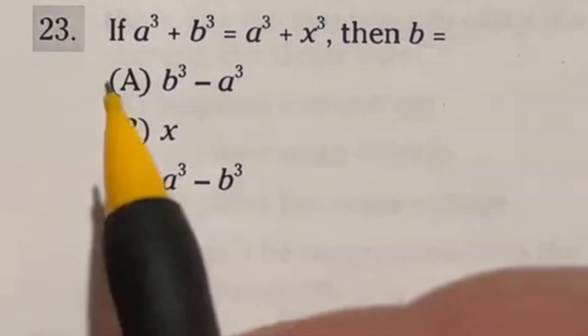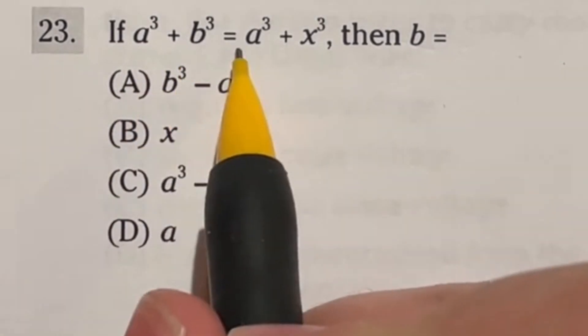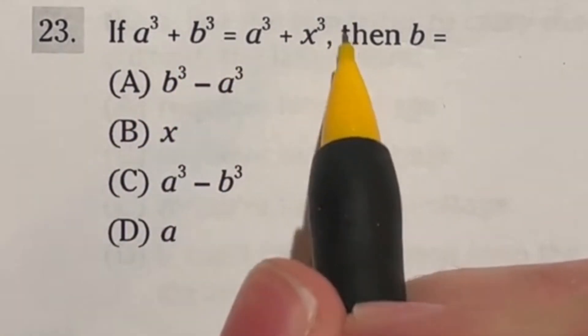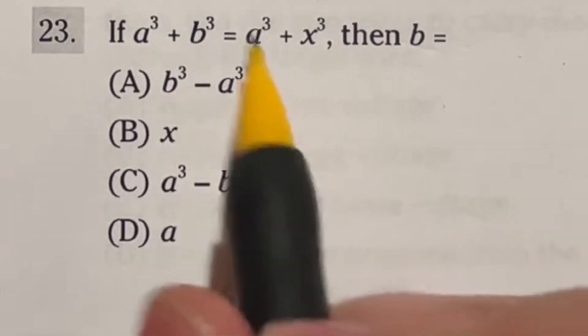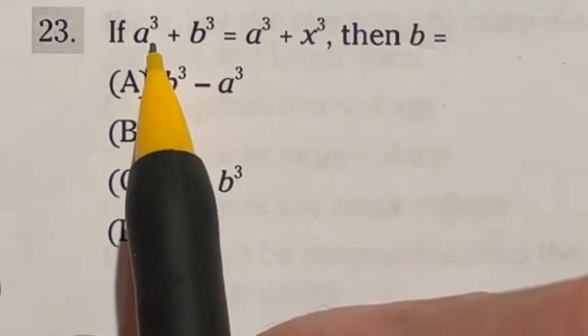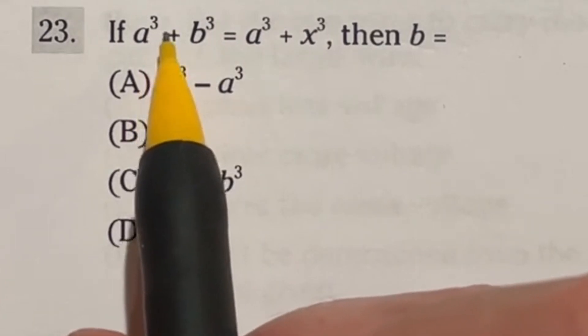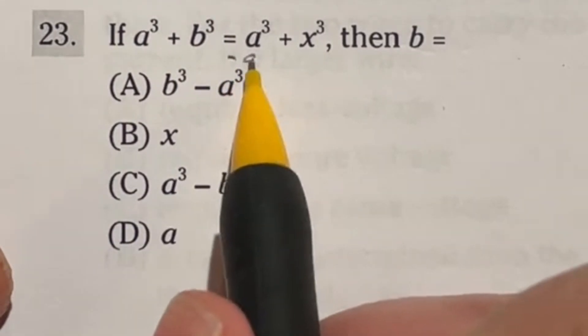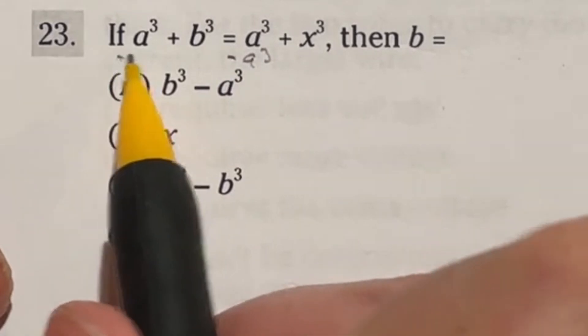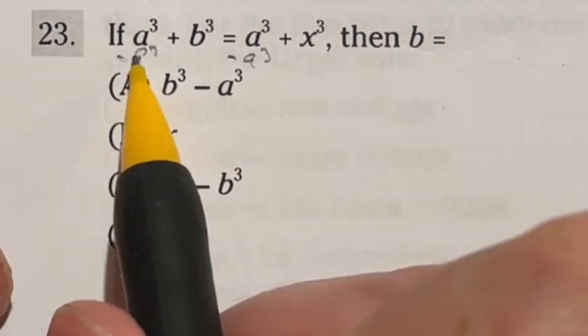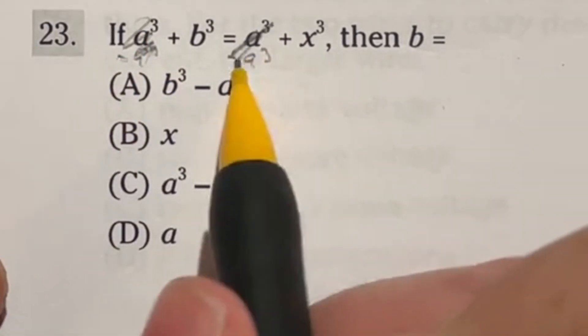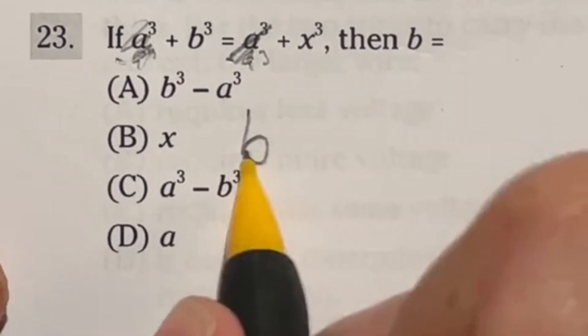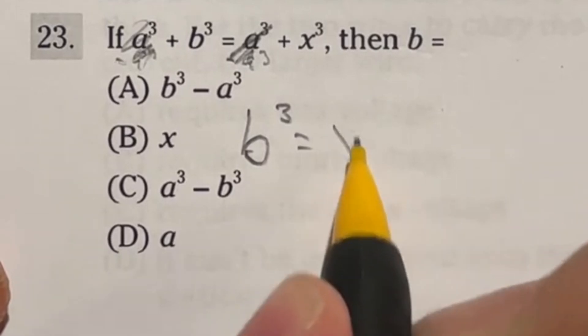So let's take a look at 23 here. It says a cubed plus b cubed equals a cubed plus x cubed. Now it looks like you may be able to do a lot of like moving things around maybe like, Oh, what's the formula for a perfect cube or something like that. Now you don't need any of that. In this case, first thing we're going to do is we're just going to subtract a cubed from both sides. And that ends up canceling out.